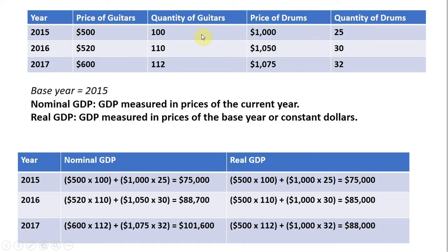For nominal GDP, you take the output of that year — for example, the output in 2015 for guitars and drums — and multiply that by their respective prices, then sum those two values together. Real GDP is GDP measured in the prices of the base year. Since the base year is 2015, we're going to use $500 for the price of guitars and $1,000 for the price of drums.